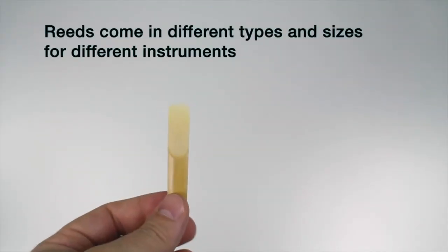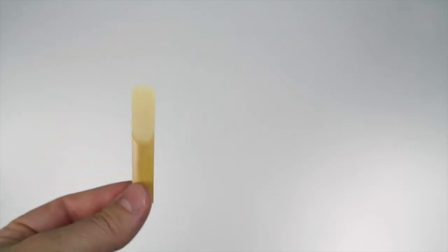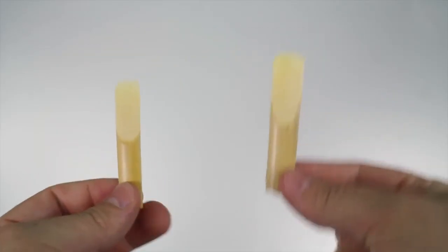Reeds come in different types and sizes for different instruments. For example, this is a clarinet reed, and this is an alto sax reed.